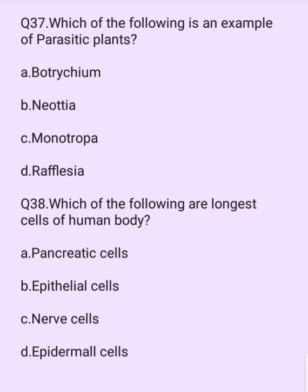Which of the following is an example of a parasitic plant? Options are: Botrychium, Neesia, Monotropa, Rafflesia. The answer is option D: Rafflesia.